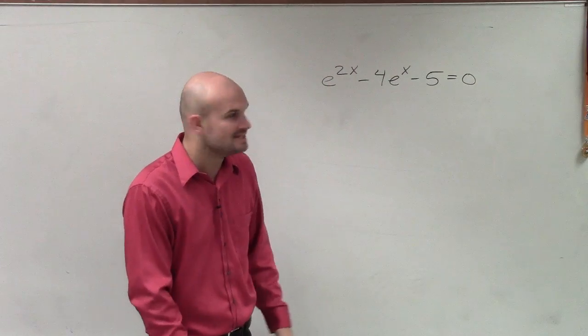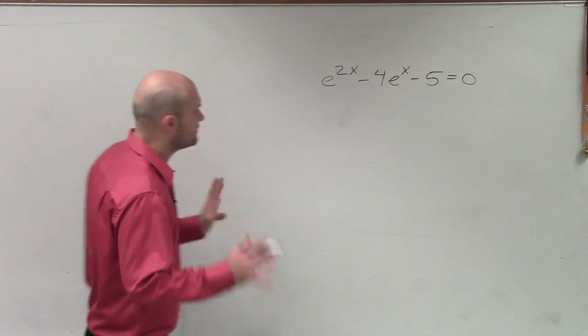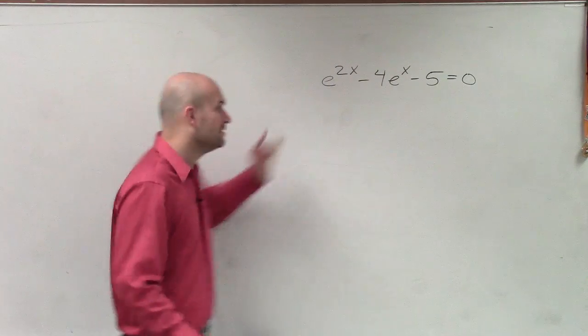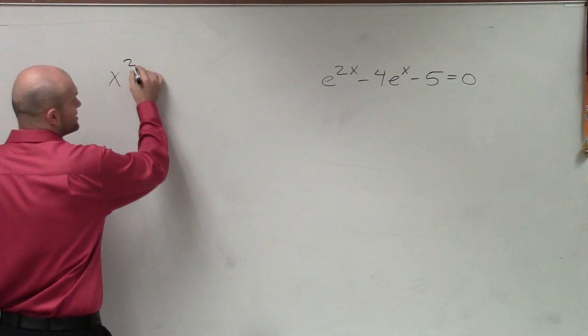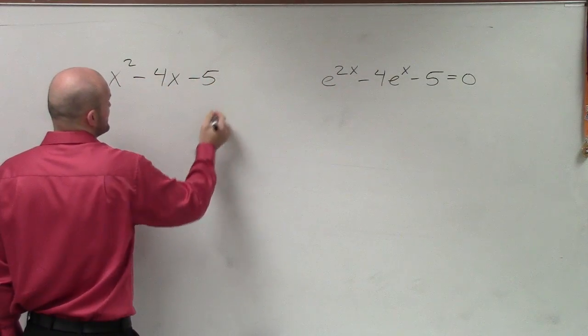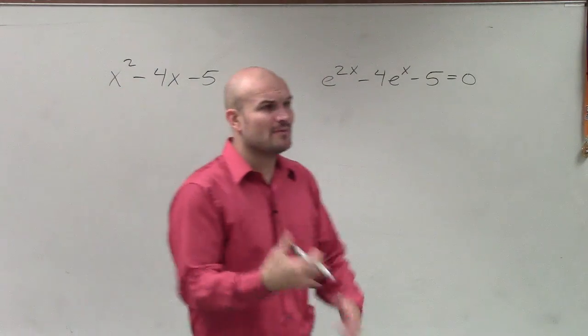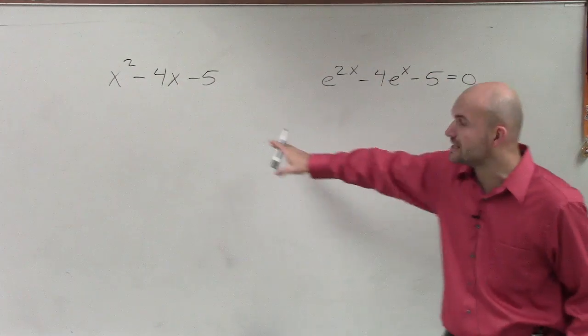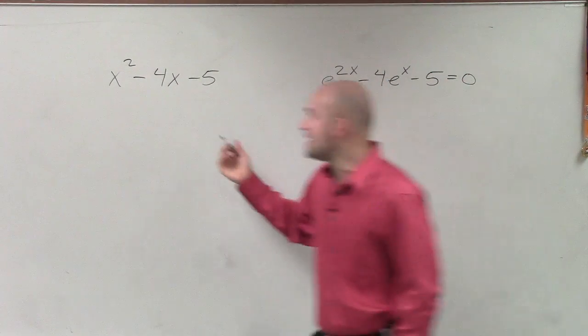We see that we have two versions of our e to the x. Now, one thing I look at this is I do notice this does kind of look a little bit of a quadratic, kind of something like this: x squared minus 4x minus 5. Kind of similar to that. And whenever I get something that looks similar to a quadratic, a lot of times I'll do that to say, can I rewrite this? Can I factor this?